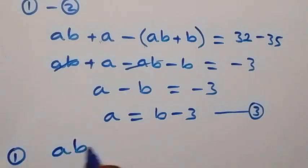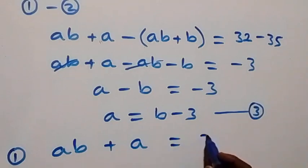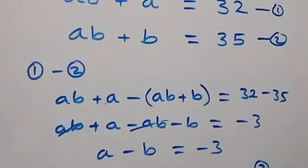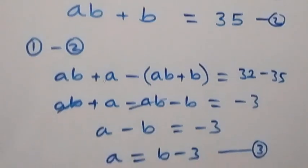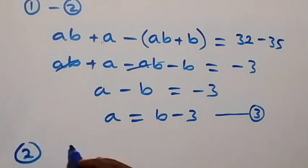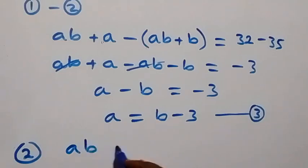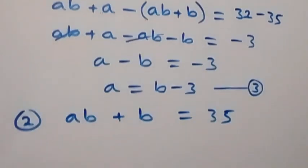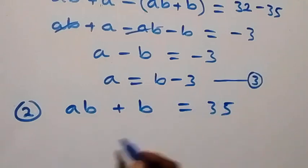From equation 1 which is ab plus a equals 32, let's use equation 2 instead — ab plus b equals 35 — and substitute the value of a from equation 3 into it.